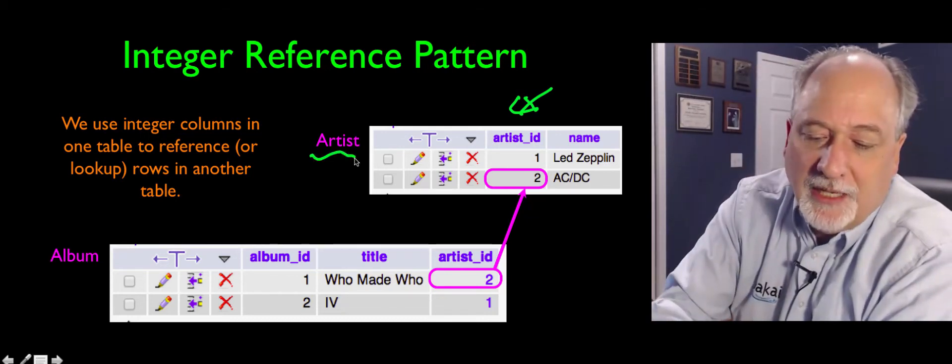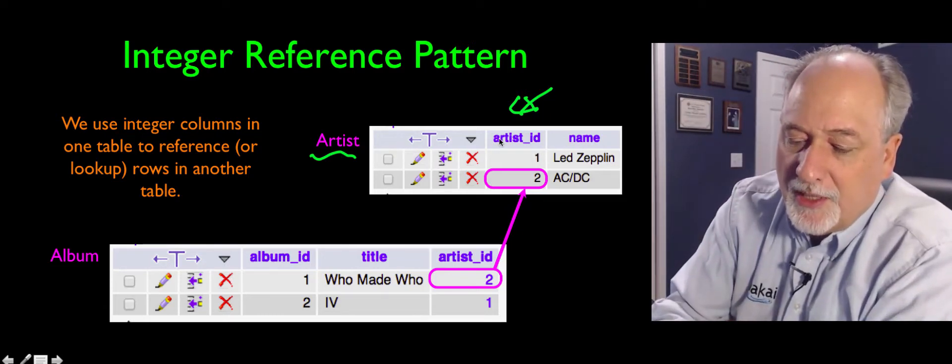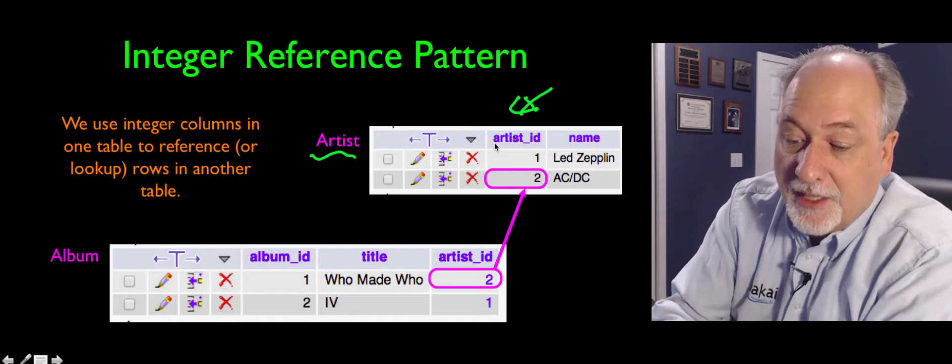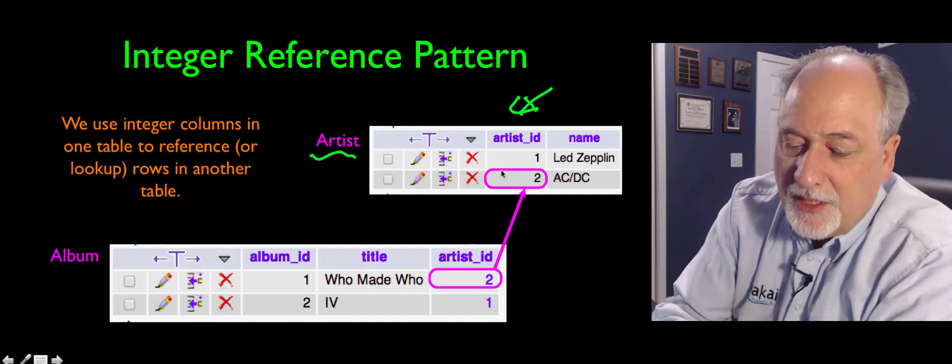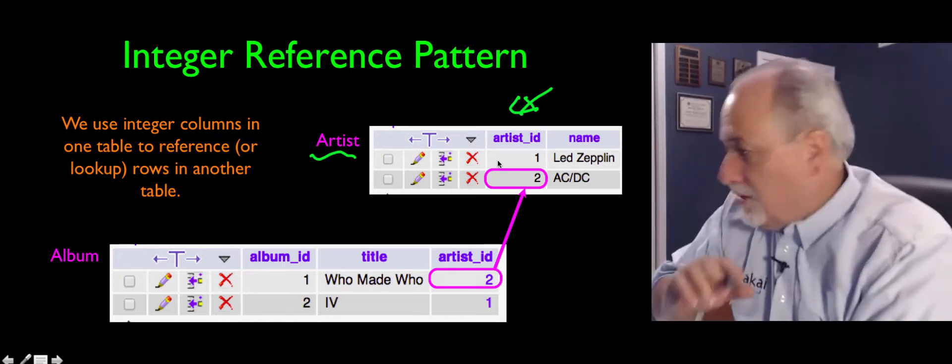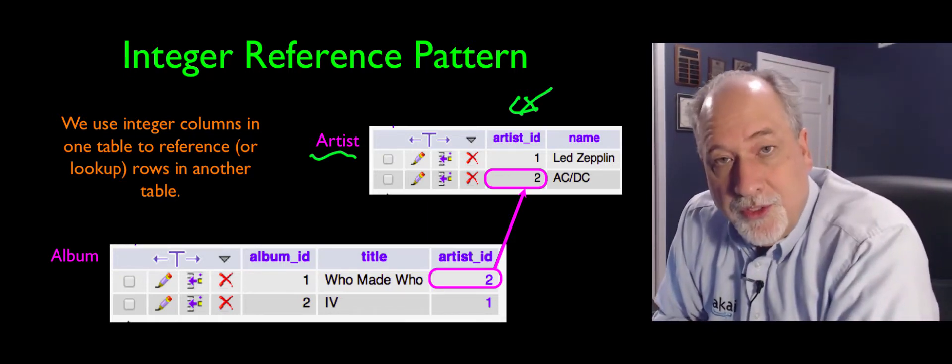My table names have capital letters in them, capital artist. My columns are all lowercase, and artist underscore ID is the key in the artist table that is magically ACDC everywhere in this system. Even if we had hundreds of tables, we will use the number two to represent ACDC.